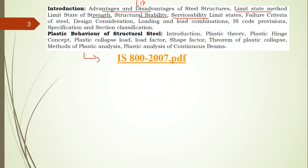Before writing, briefly introduce what limit state method means and the role of the factor of safety. Then write that in the limit state method for steel there are three criteria: strength, stability, and serviceability. With respect to each, the criteria are in IS 800:2007. Write down the points for limit state of strength, then limit state of stability, then serviceability. This is the second expected exam question: write a note on limit state method.